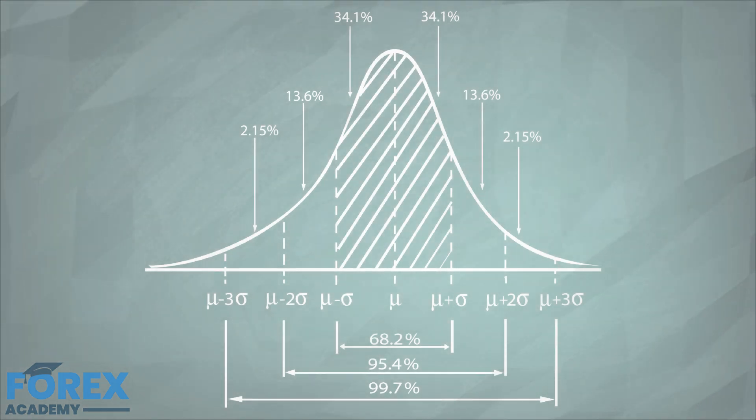For instance, we know that the likelihood of a value falling between the mean and plus one standard deviation of the mean is 34.1%. So to have a proper picture of where a point is in the distribution, it is essential to standardize it.